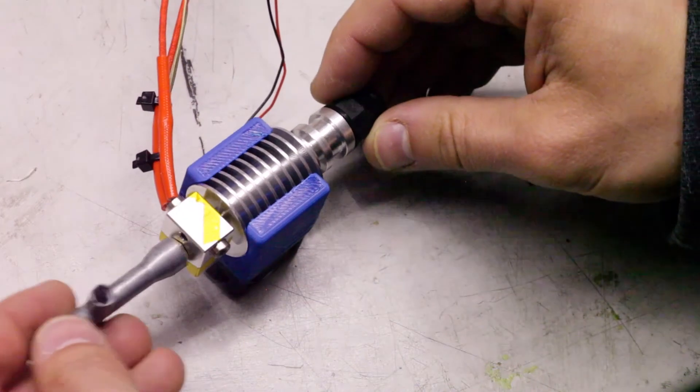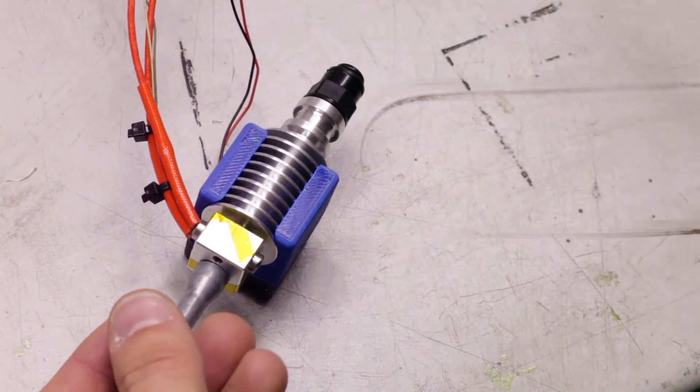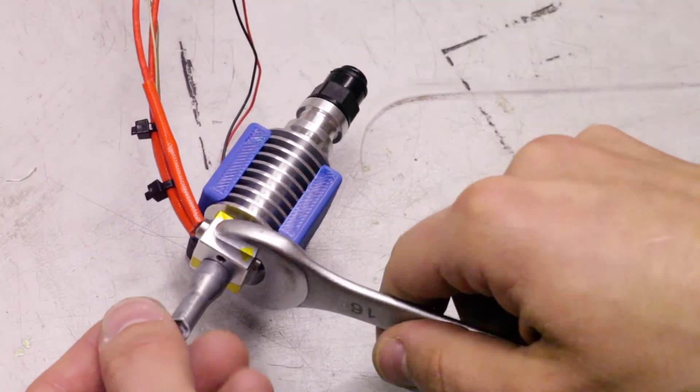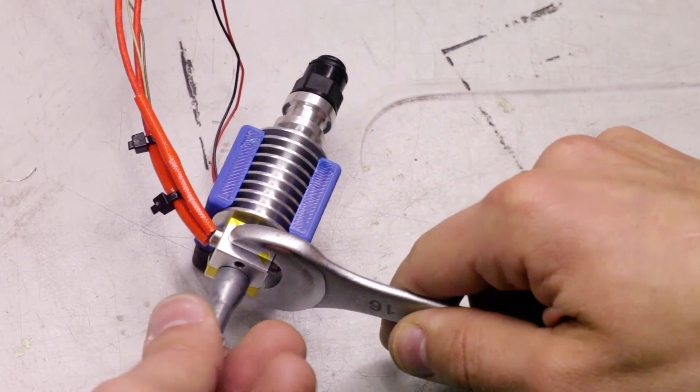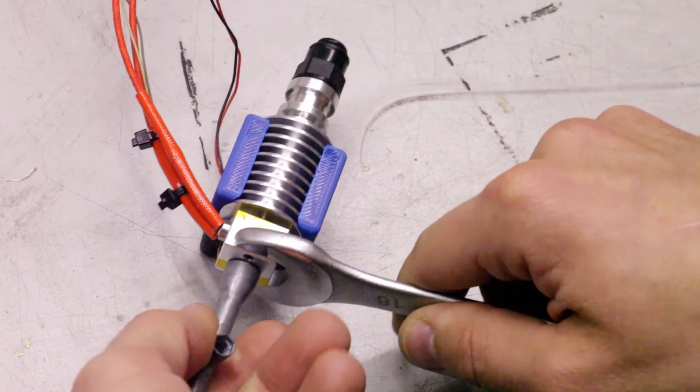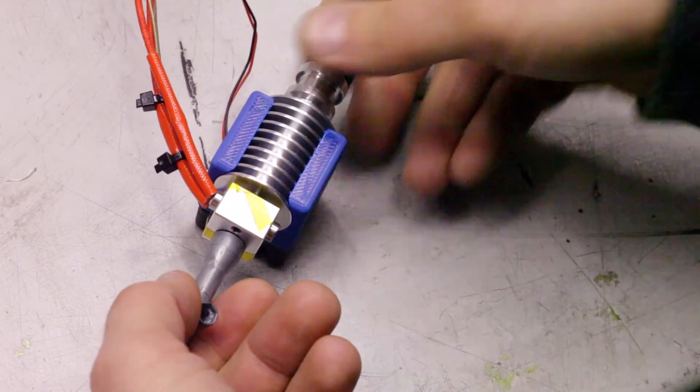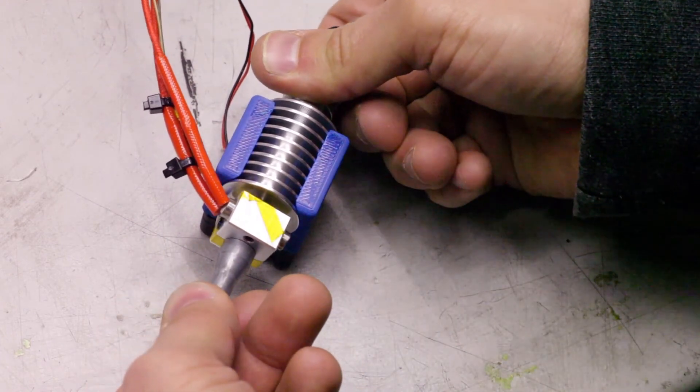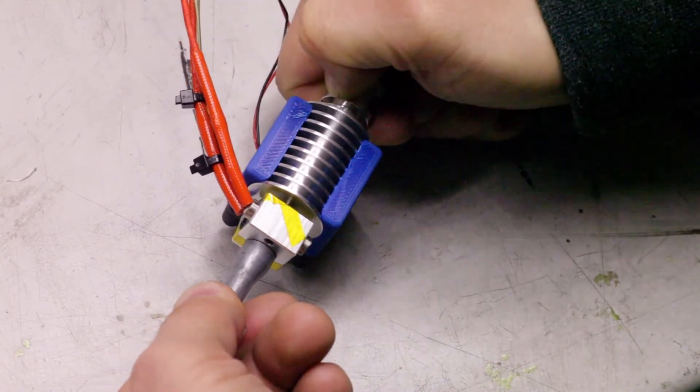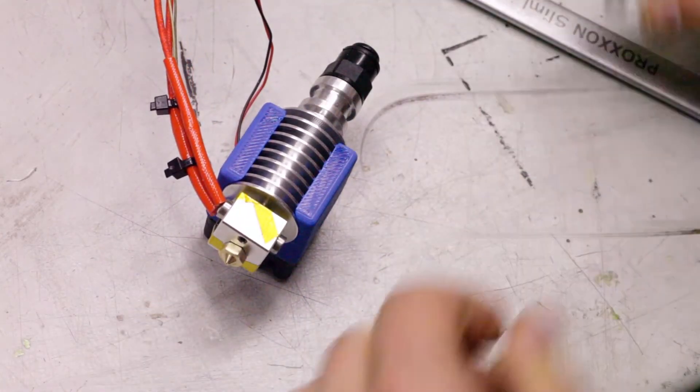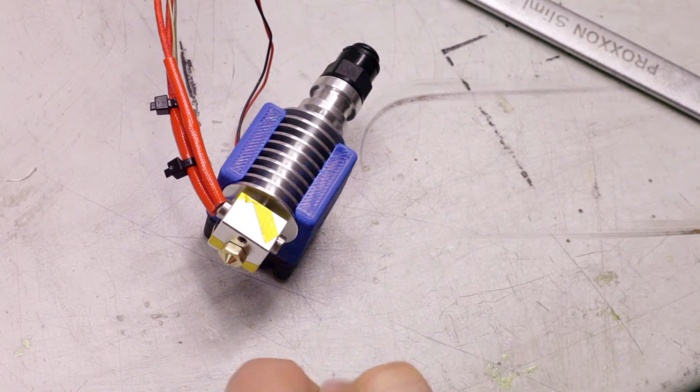Use a 16mm wrench to hold onto the heater block, then tighten the nozzle with another wrench or ratchet. Again, this doesn't need to be super tight. E3D recommend using just one finger to tighten it. Then let go of the heater block and lightly tighten the nozzle one more time. This will actually tighten the heatbreak inside the heatsink.